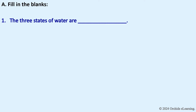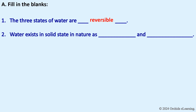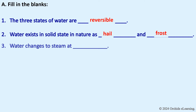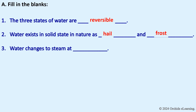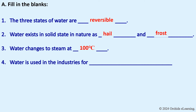Fill in the blanks: The three states of water are solid, liquid, and gas. Water exists in solid state in nature as hail and frost. The change is reversible. Water changes to steam at 100°C. Water is used in industries for generating electricity.